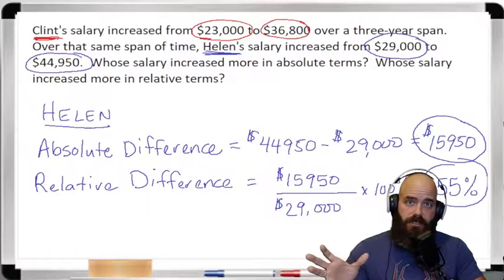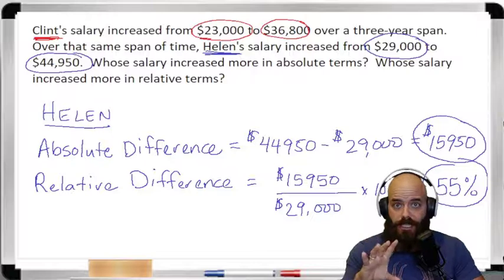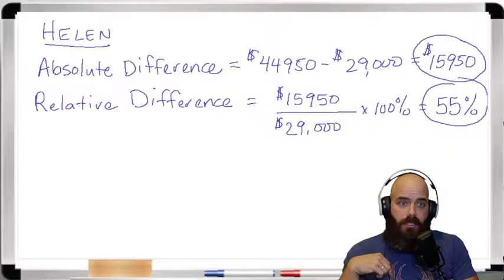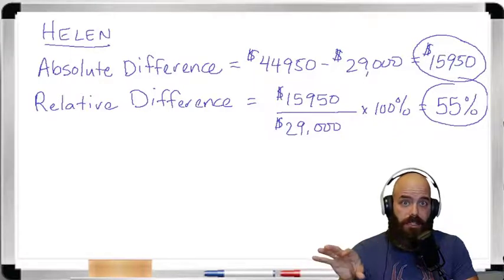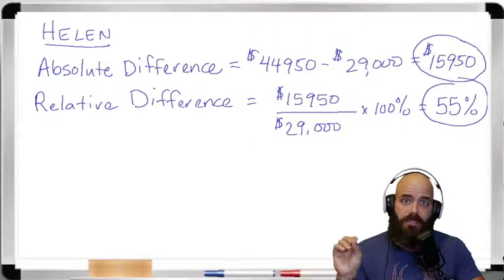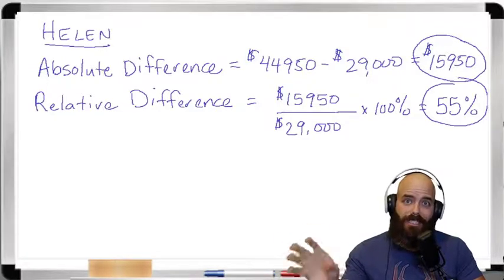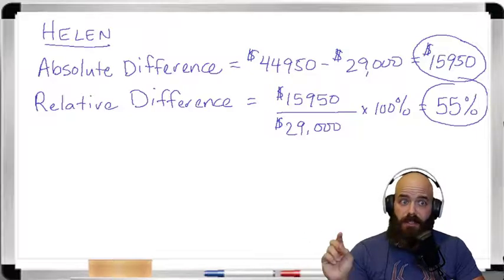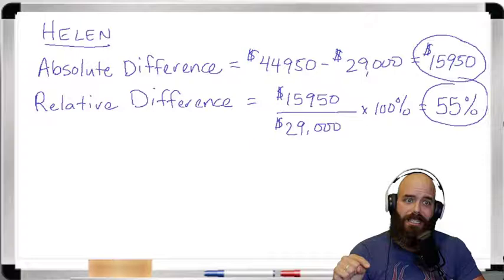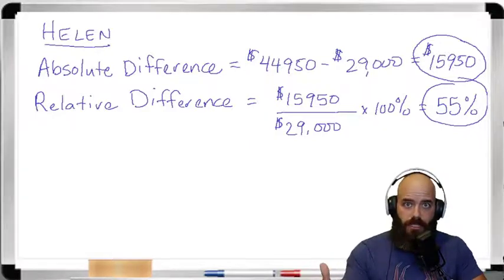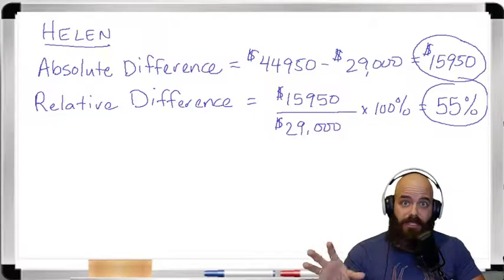Over this three-year span she accumulated $15,950 in pay raises, comparing her ending salary to her beginning salary. Her relative difference is $15,950 divided by the reference value of $29,000 times 100%, which equals 55%. This means she has earned 55% of her beginning salary in pay raises — 55% of $29,000 is $15,950, which represents her absolute total of pay raises over that time span.